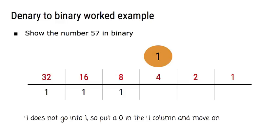Now, we can't take 4 out of 1, 4 is too big. So what we do for this one is we put a 0 in the 4 column, and we just move on, no subtracting here.